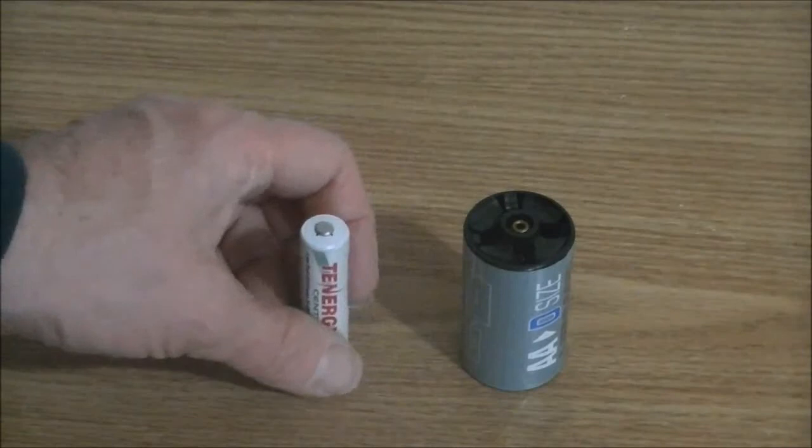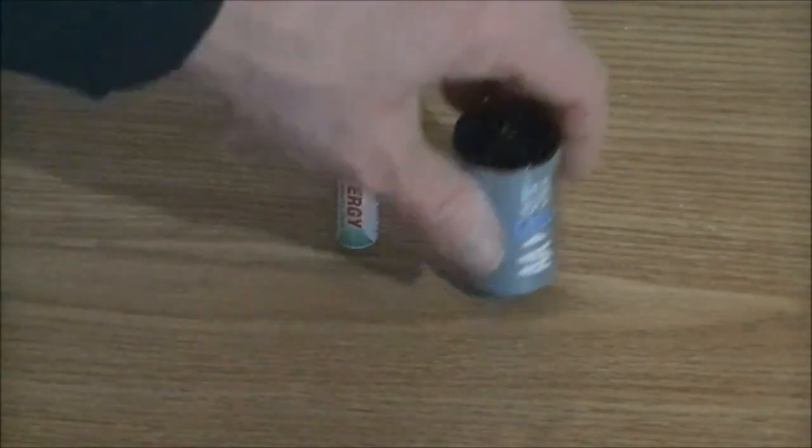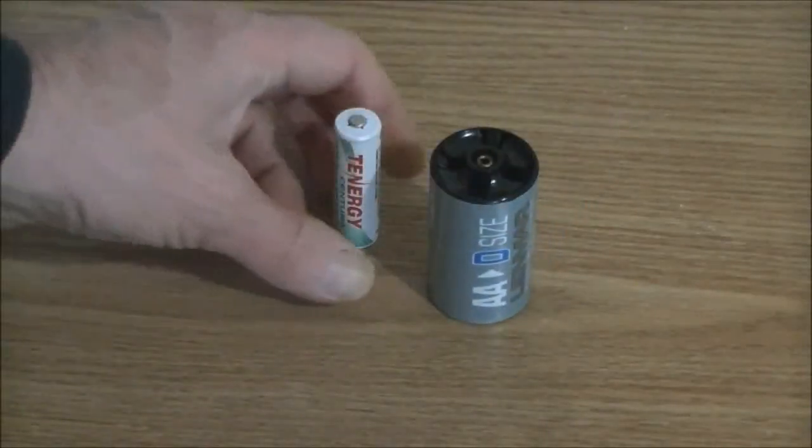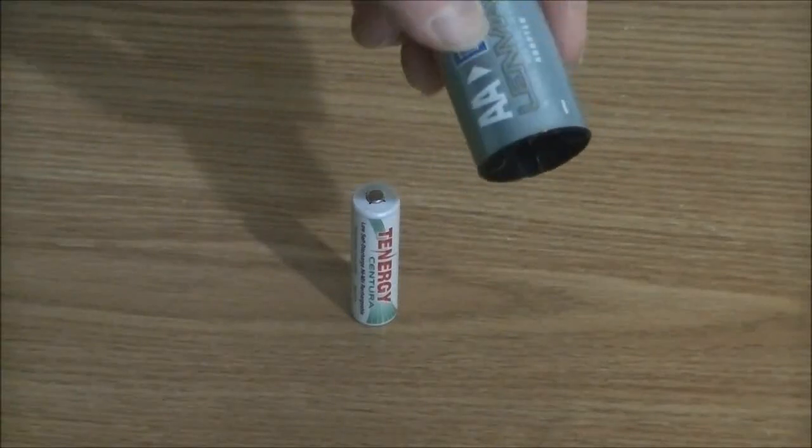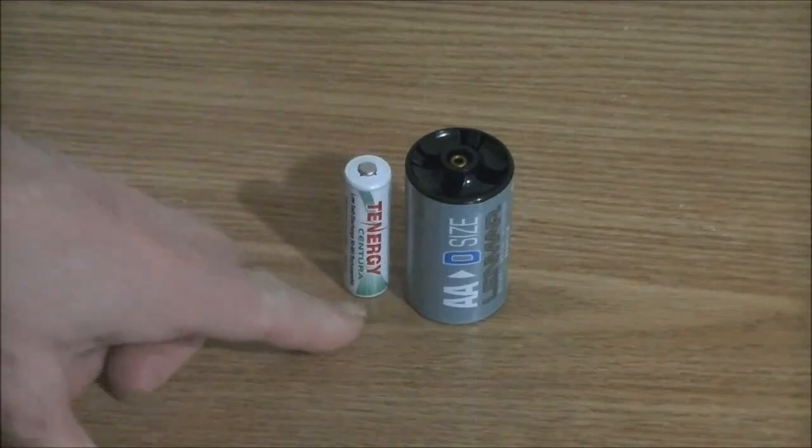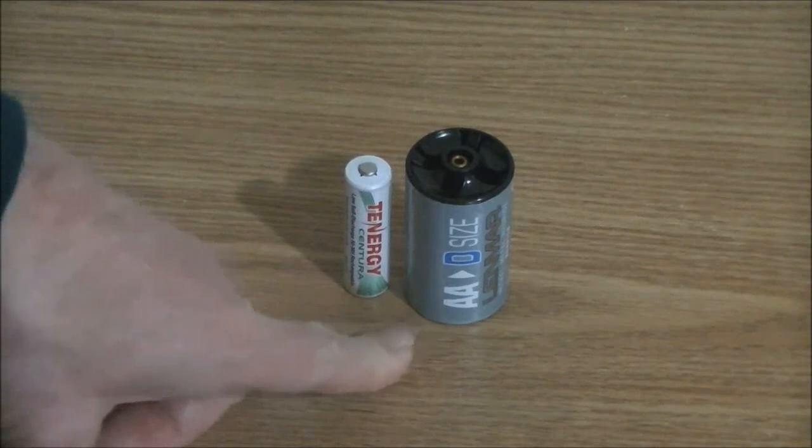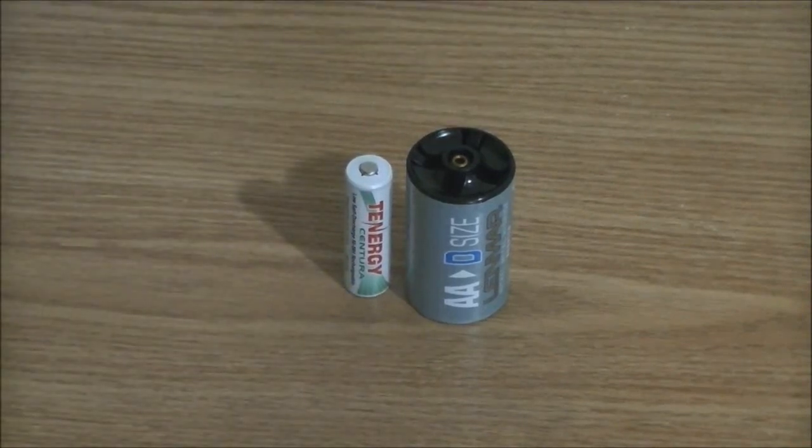One thing I forgot to mention, they make these kind of spacers for C-cell applications also. So these spacers also come in C-cell size. These double A's can be double A, they can be C, or they can be D-cells. As long as you have the spacers, you can use them for all those different applications.